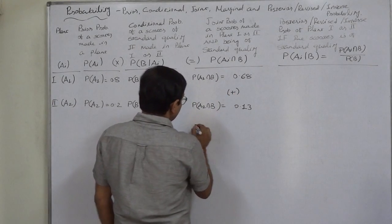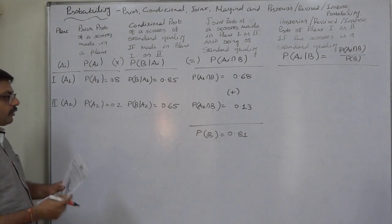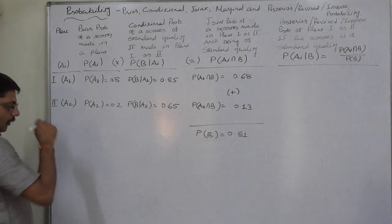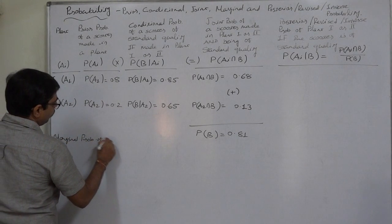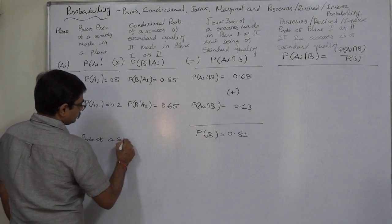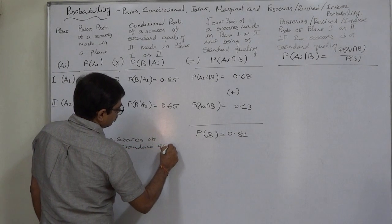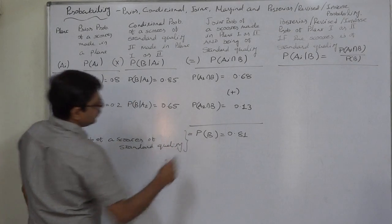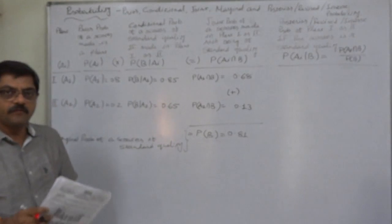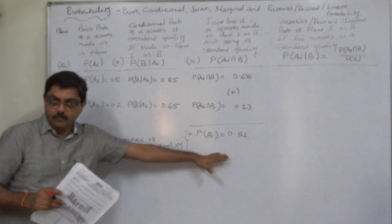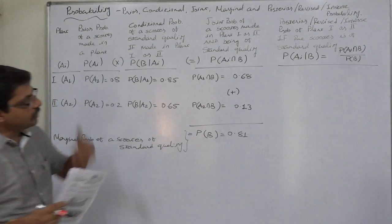The summation of these two joint probabilities is the marginal probability of B: 0.68 + 0.13 = 0.81. The marginal probability of B is the probability of a randomly selected scooter being of standard quality — that is P(B) = 0.81 — irrespective of which plant manufactured it. Now we can calculate the revised, posterior, or inverse probability.